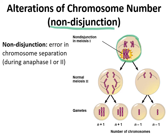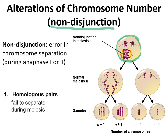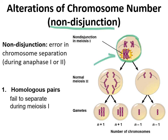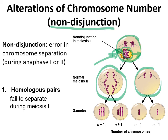A non-disjunction error in chromosome separation can happen during anaphase 1 or anaphase 2. This picture is for anaphase 1, showing that the homologous pairs — one was supposed to go to one side and one to the other during anaphase 1 of meiosis. But if that doesn't happen, they both end up on the same side. The resulting cells end up with a different number of chromosomes: one cell got both of that chromosome, and one got none.